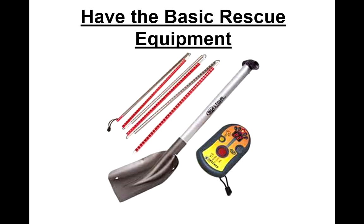Some of the things you'll need to have are the basics: an avalanche probe, an avalanche shovel, an avalanche transceiver, and also an inclinometer. This particular one is in compass form. There are cards, sighting tools, and some people also utilize their phone — certain apps for angle measurement. There are also tools like a sticker you can put on your pole to give you a feel for approximate angles.